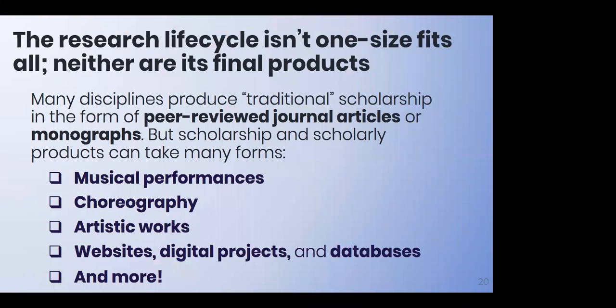It's not one size fits all, and neither are the final products. A lot of disciplines produce traditional scholarship — a peer-reviewed journal article or a monograph — but scholarship and scholarly products can take many different forms: musical performances, choreography, artistic works, websites, digital projects, databases, and more. With UNCG being a campus that has a lot of visual and performing arts and other areas, we see a lot of different types of research products and forms of the research life cycle.